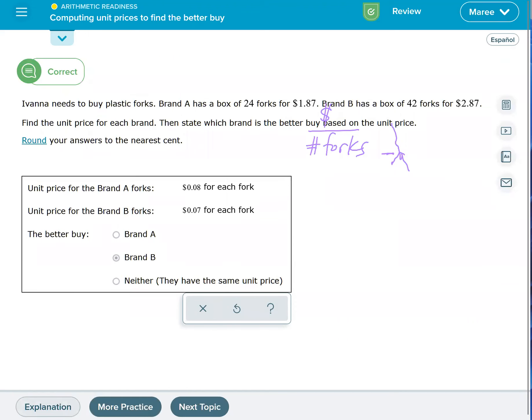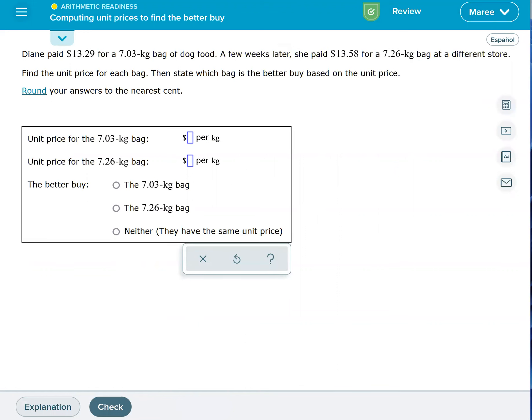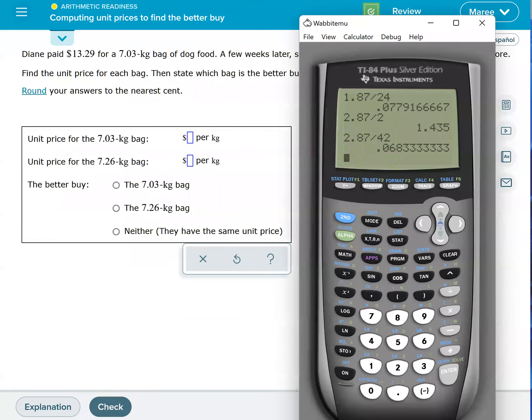So let's just do one more here. The 7.03 kilogram bag—see how it says dollars per kilogram? We want to take the cost of the 7.03 kilograms, which is $13.29. We'll do $13.29 and divide it by 7.03 because that's how many kilograms there are. To the nearest cent, it's going to be $1.89.